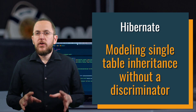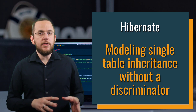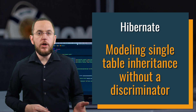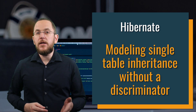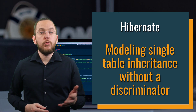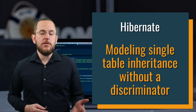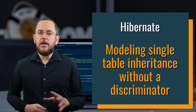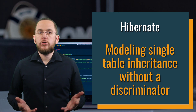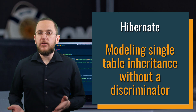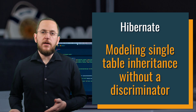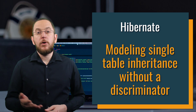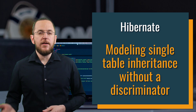Using this strategy introduces a technical requirement. For each database record, Hibernate needs to identify the subclass to which it has to map it. The default mapping uses a discriminator column which contains a class-specific identifier — in most cases, that's the simple name of the entity class.